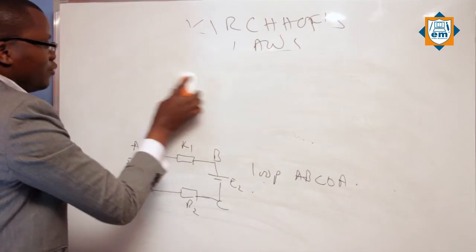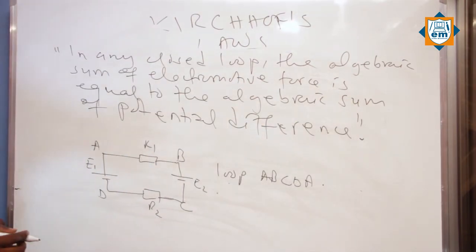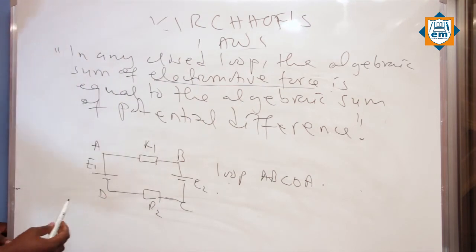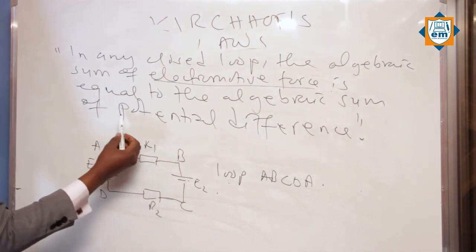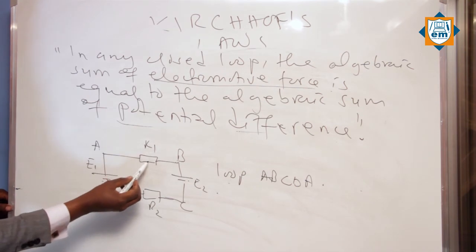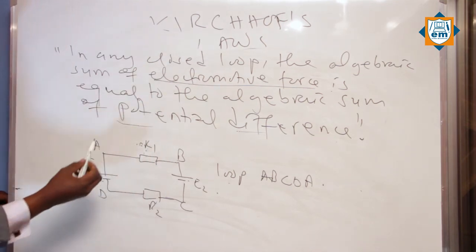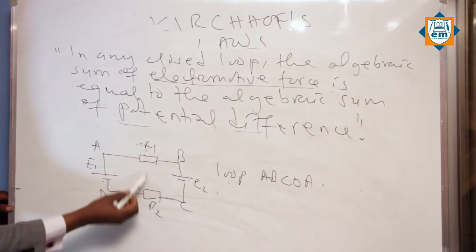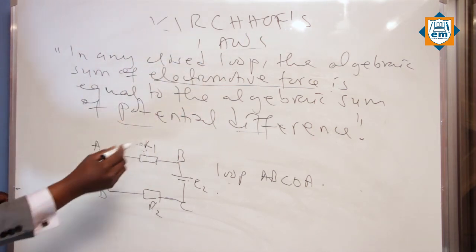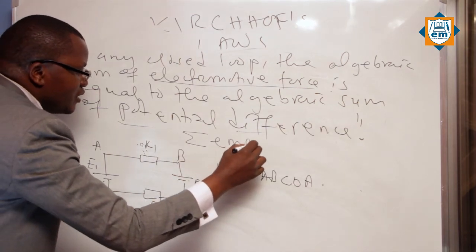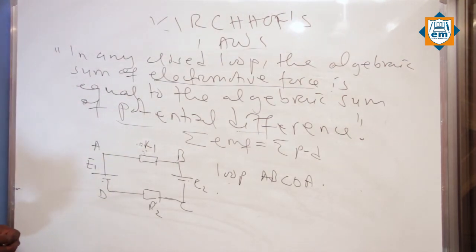The statement of the law — the EMF is the voltage across the cell. According to the statement of the law, the sum of the electromotive force is equal to the sum of the potential difference. That is the statement of the second law.